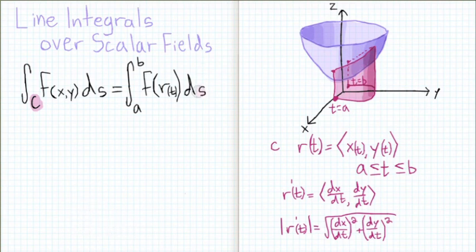But we still have one problem, the ds. Everything else so far in our integral is in terms of t. So we want to get rid of ds and put it in terms of t as well.